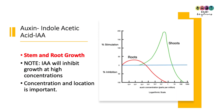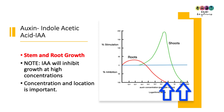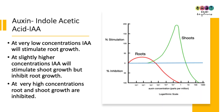The effect a growth regulator has depends on its concentration and where it's acting — the location. There is an important graph showing that at high concentrations, IAA acts as a growth inhibitor, preventing both root and shoot growth. At very low concentrations of IAA, roots are stimulated to grow, and at slightly higher concentrations shoots are stimulated to grow, but the roots are inhibited at that same concentration.